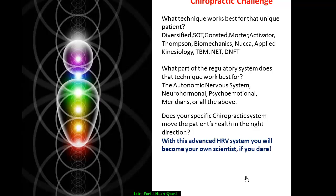For example, I put chiropractic because I'm a chiropractor, but I use functional medicine and bioenergetic medicine to bring my patients to a better place as far as their health goes. Whatever the technique is — whether you're using Diversified, SOT, Gonstead, Mortar, Activator, Thompson, Biomechanics, NUCCA, Applied Kinesiology, TBM, NET, DNFT — you want to know what those particular techniques do as far as what are they going to affect in the body. Are they affecting the autonomic nervous system? Are they affecting the neurohormonal system? The psychoemotional, the meridians, or all of the above? My guess is that different techniques have different effects on different regulatory systems.